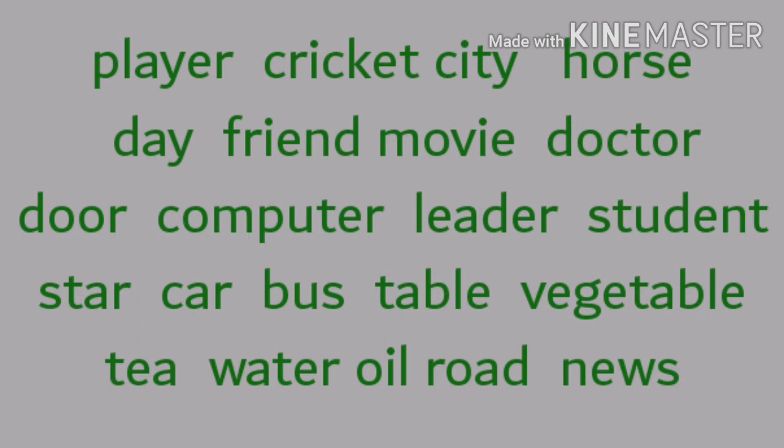These are generalized versions of proper nouns. For example, 'player' — if you mention the name of a player, it comes under proper noun. 'City' — if you say Bombay, it's a proper noun; if you say city, it's a common noun. 'Horse' — if you mention the name of a horse, it's a proper noun; otherwise it is a generalized term. Like that: day, friend, movie, doctor, door, computer, leader, student, star, car, bus, table, vegetable, tea, water, oil, road, and news.